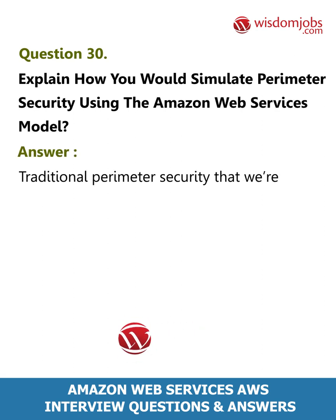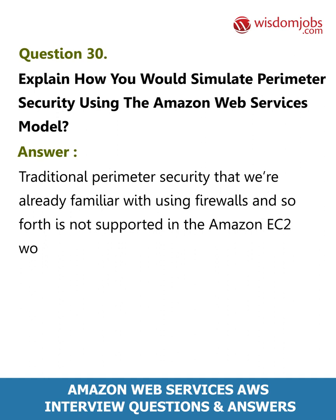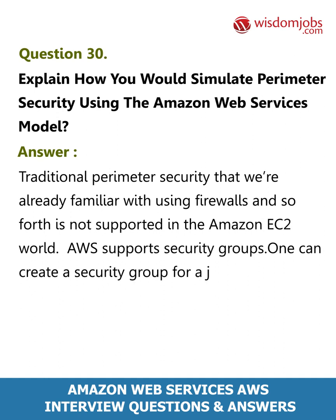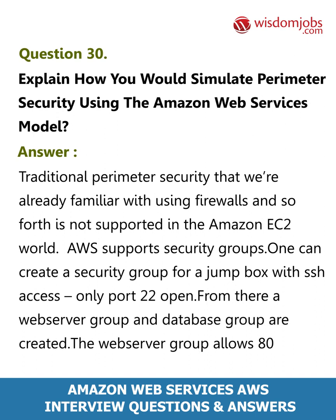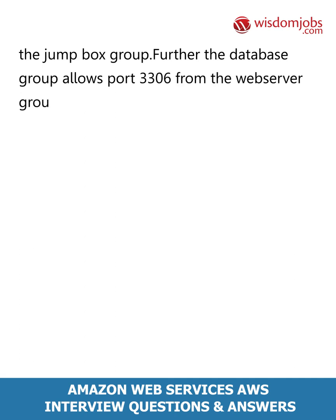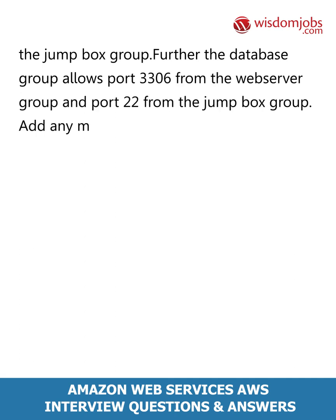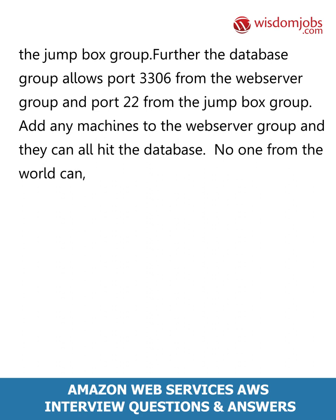Question 30: Explain how you would simulate perimeter security using the Amazon Web Services model. Answer: Traditional perimeter security using firewalls is not supported in the Amazon EC2 world — AWS supports security groups instead. Create a security group for a jump box with SSH access only (port 22 open). From there, a web server group and database group are created. The web server group allows ports 80 and 443 from the world, but port 22 only from the jump box group. The database group allows port 3306 from the web server group and port 22 from the jump box group. Add machines to the web server group and they can all hit the database, but no one from the world can, and no one can directly SSH to any of your boxes.